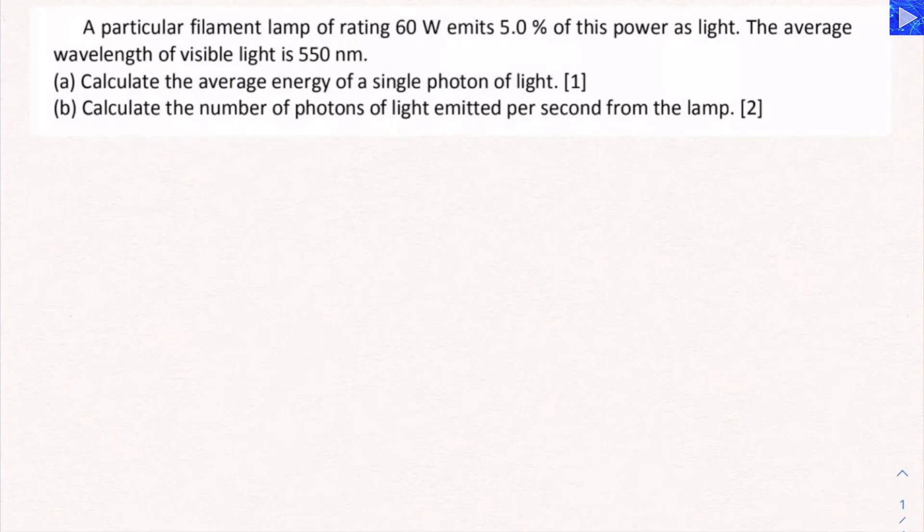The next question concerns a particular filament lamp. It's got a power rating of 60 watts. 5% of that power is emitted as light. The average wavelength of visible light is 550 nanometers. In part A, calculate the average energy of a single photon of light.